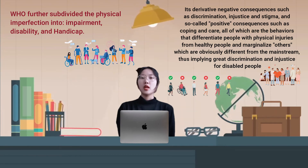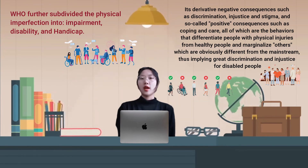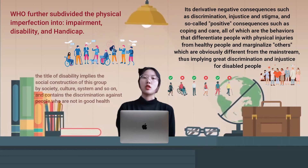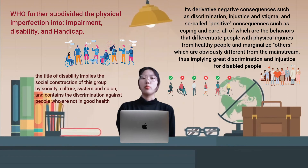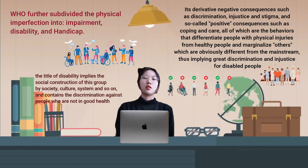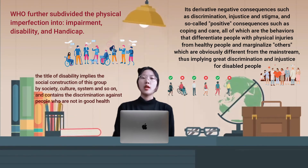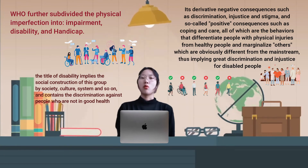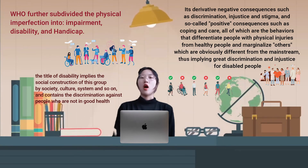In short, the label of disability implies the social construction of this group by society, culture, and systems, and contains discrimination against people who are not in good health.